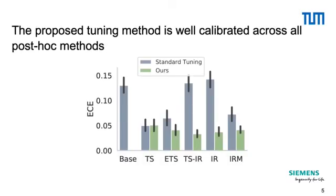Regarding our experiments, we tuned two sets of post-hoc calibrators. One set was tuned in a standard manner based on the validation set, and the second set was tuned with the proposed method based on the perturbed validation set. Across 14 corruptions, we see that using our tuning approach substantially improves calibration performance compared to standard tuning.